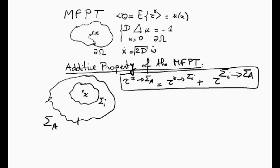The time to go from x via σᵢ to σₐ can be written as the time to go from x to σᵢ, plus the time to go from σᵢ to σₐ. This is the additive property we want to discuss. In terms of trajectory, a trajectory starting at x first hits σᵢ somewhere, then continues and reaches σₐ, and then we average over all trajectories.